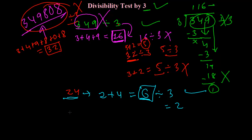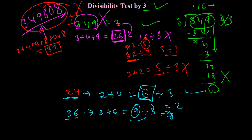Take 36. To check whether 36 is divisible by 3, just add 3 and 6: 3 plus 6 equals 9. If you divide 9 by 3, you get 3, so 9 is divisible by 3. Similarly, for 108: add 1 plus 0 plus 8 to get 9, and since 9 is divisible by 3, 108 is also divisible by 3. So both 36 and 108 are divisible by 3.